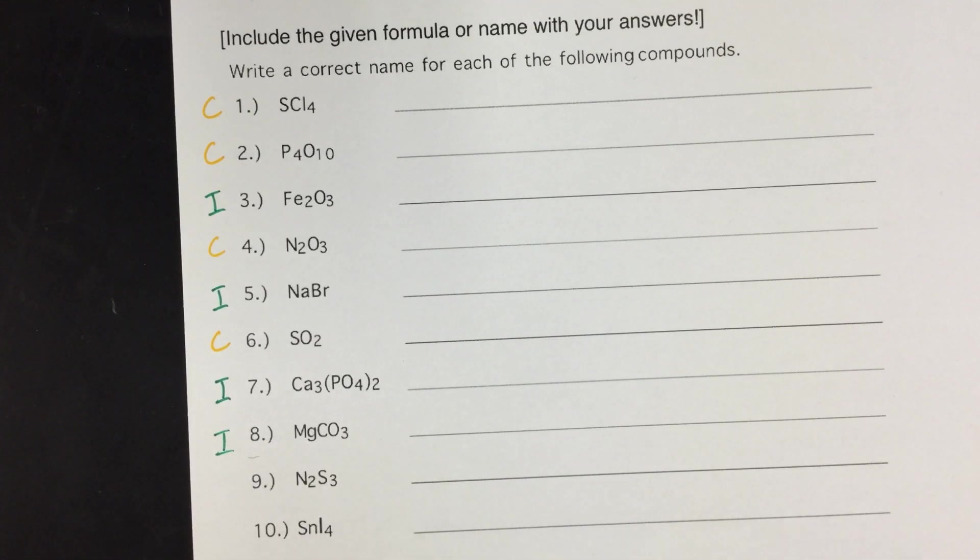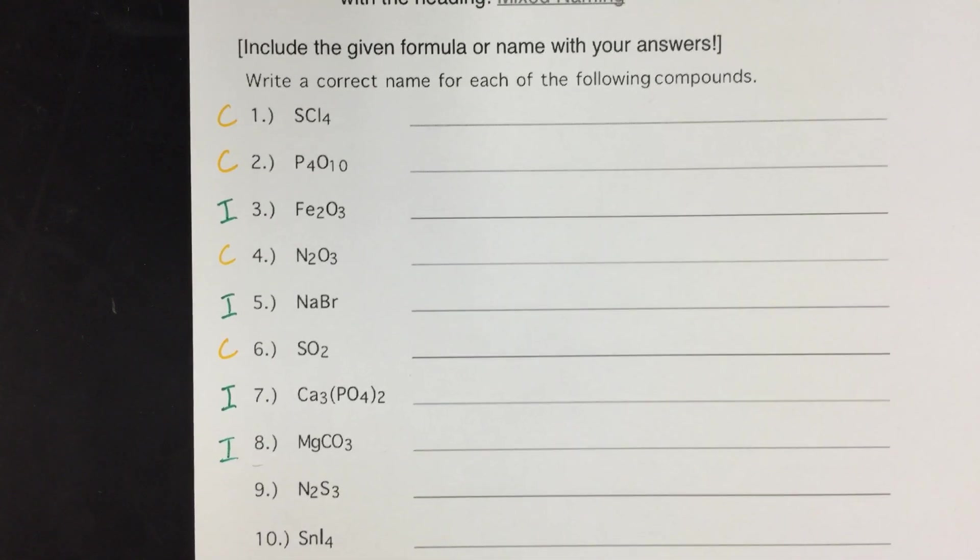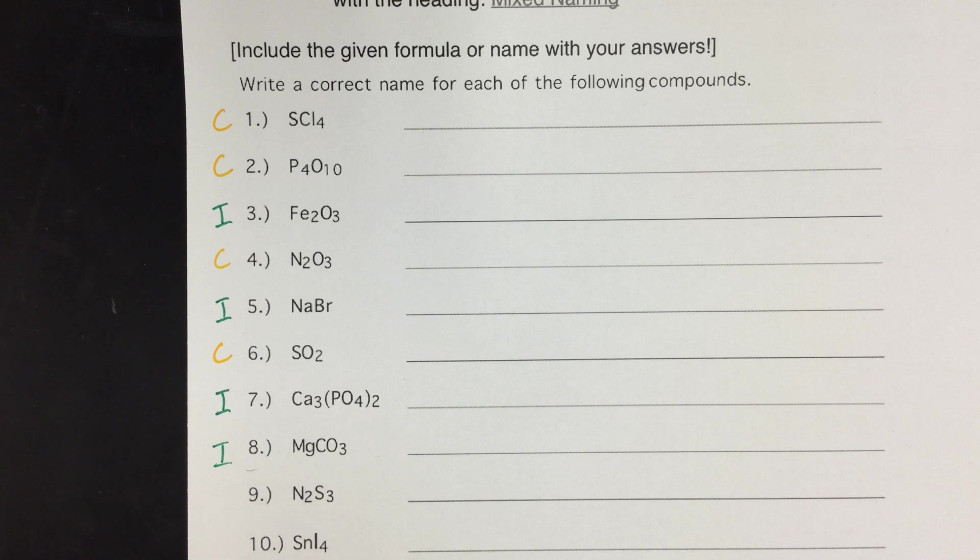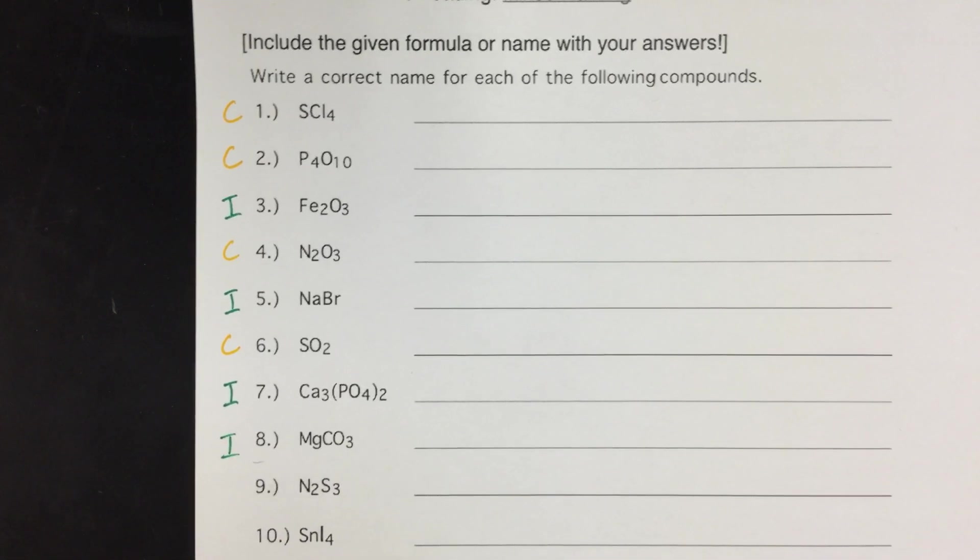So this is a really good habit to get into when you're doing homework questions, quizzes or tests for naming, just to make sure you're using the right rules. Check out the videos for covalent naming or ionic naming if you want more practice doing that.